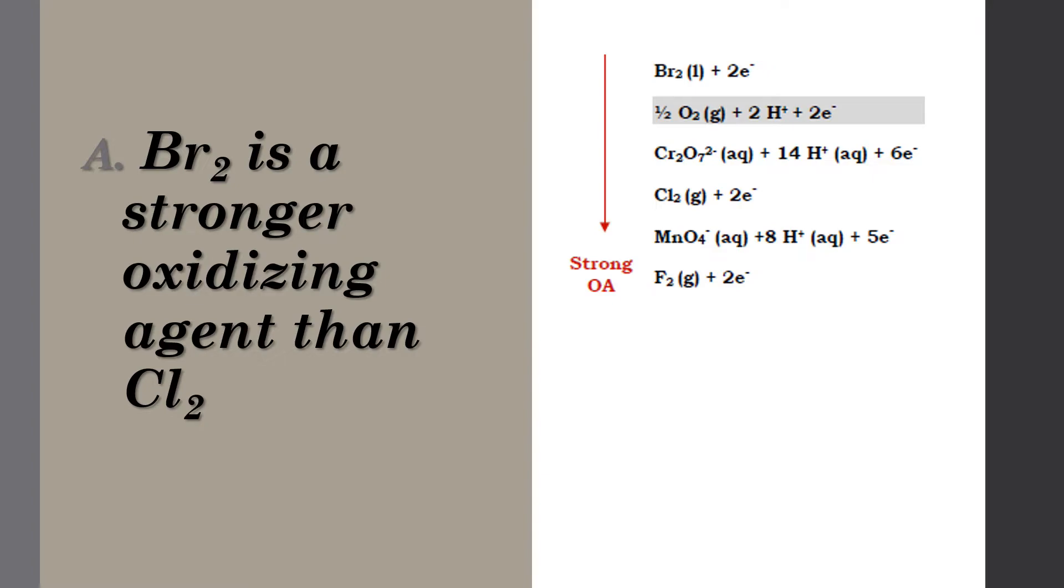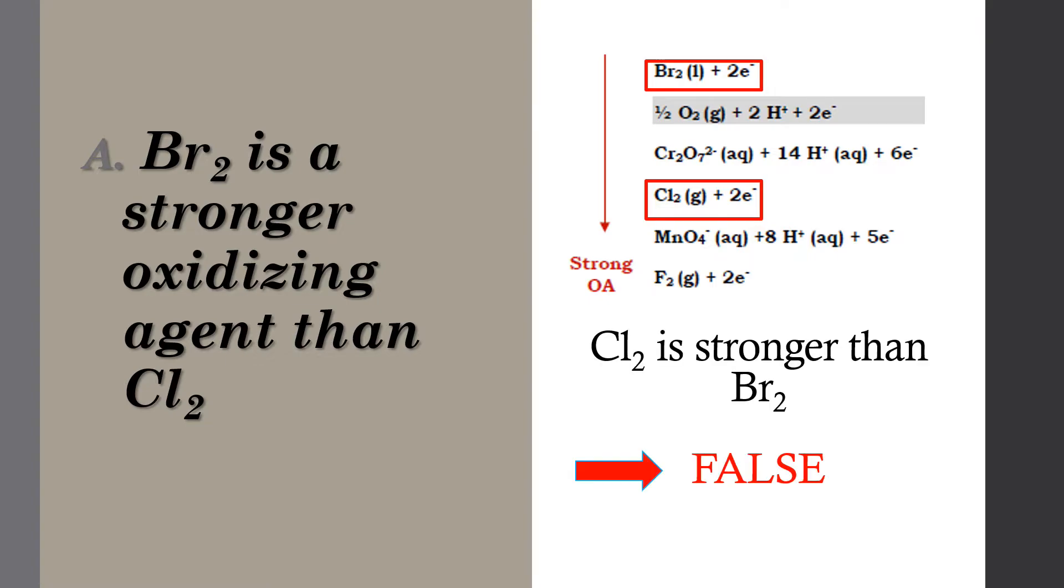These are part of the oxidizing agents so the lower you go, the stronger they are. As we can see, chlorine is lower than bromine. So chlorine is stronger than bromine, denoting this statement as false.